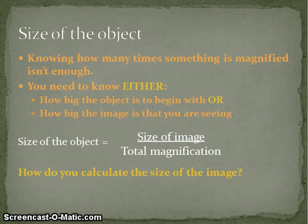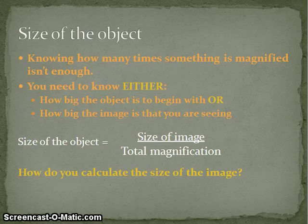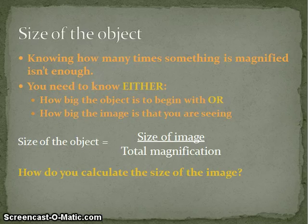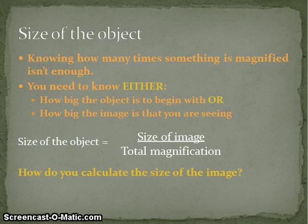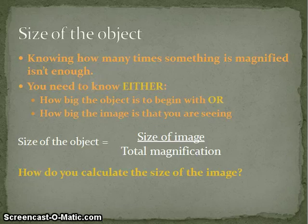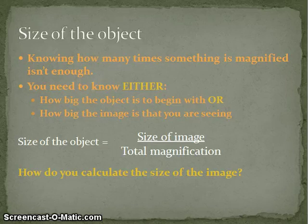But knowing how many times something has been magnified isn't really enough, because if you start off with something 2cm big and magnify it 5 times, or start with something 0.2cm big and magnify it 5 times, you end up with two completely different sizes. So to calculate actual size, you need to know either the size of the original object or the final size of the image. Knowing one of those two things plus magnification lets you work out the third.